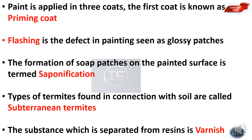Flashing is the defect in painting seen as glossy patches on the surface. The formation of soap patches on the painted surface is termed as saponification.